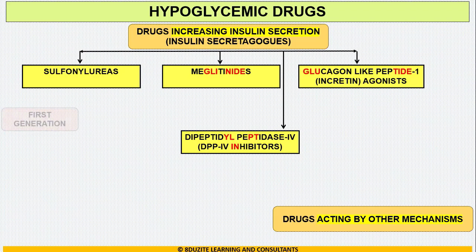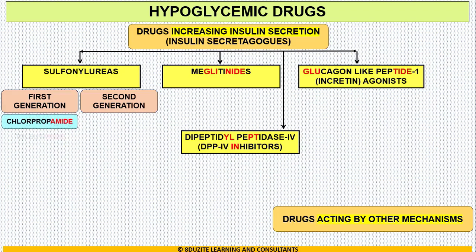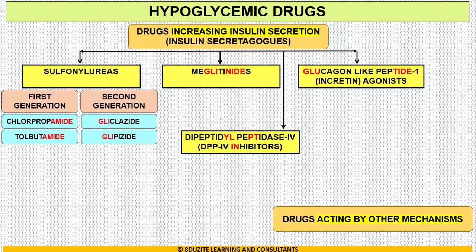In sulfonylureas, we have first generation and second generation drugs. First generation drugs include chlorpropamide and tolbutamide. Second generation drugs include gliclazide, glipizide, glimepiride, and glibenclamide.